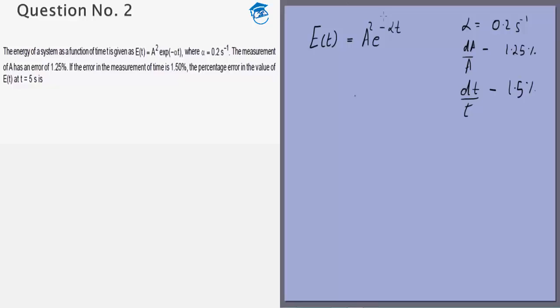So first of all we can take the log of this which makes differentiation easier. So it will give us LN E is equal to LN A squared minus alpha t.